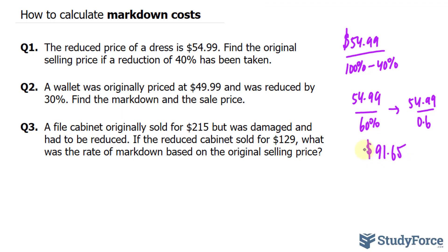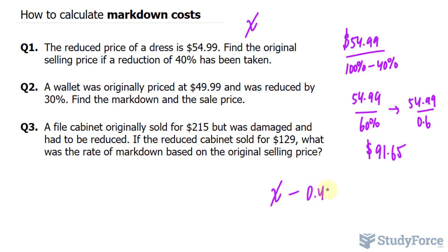Now you're probably wondering what's the logic behind subtracting 40 from 100%. The way I like to approach this type of problem is algebraically. We don't know the original cost of the item, so let's call it x. We do know that 40% of that original is being subtracted from the original, so we can write x minus 0.4x gives us the final price of $54.99.